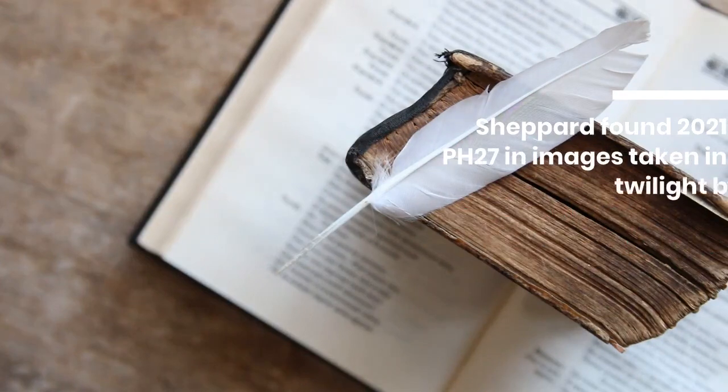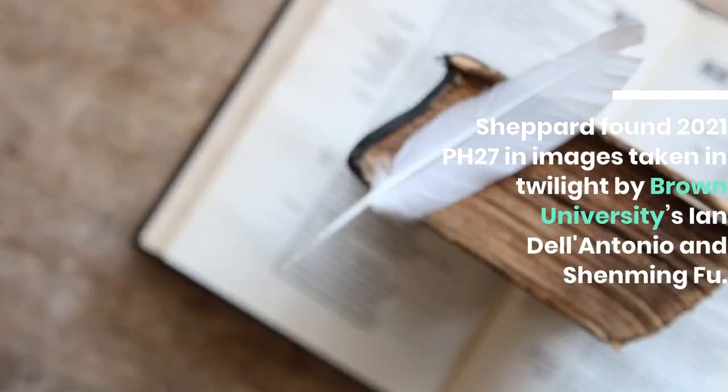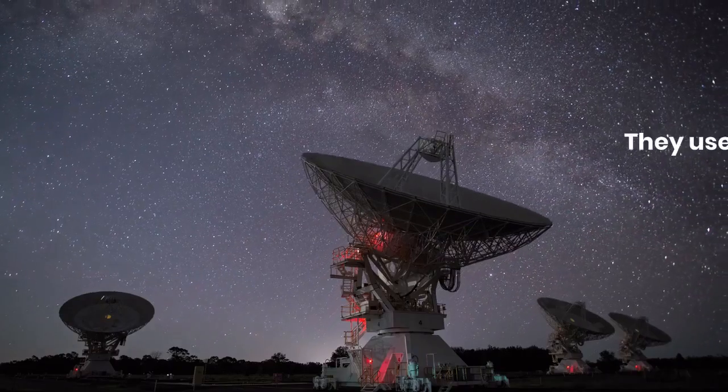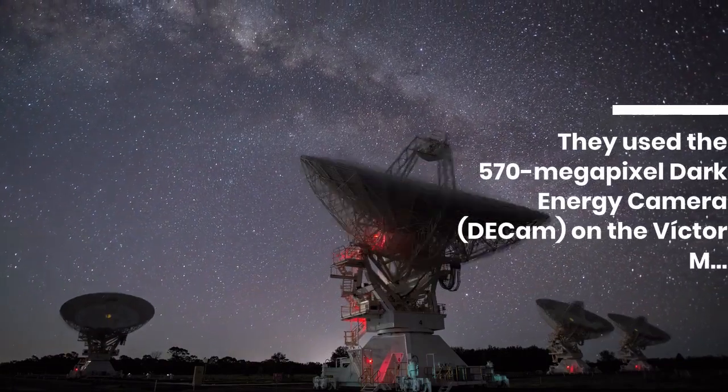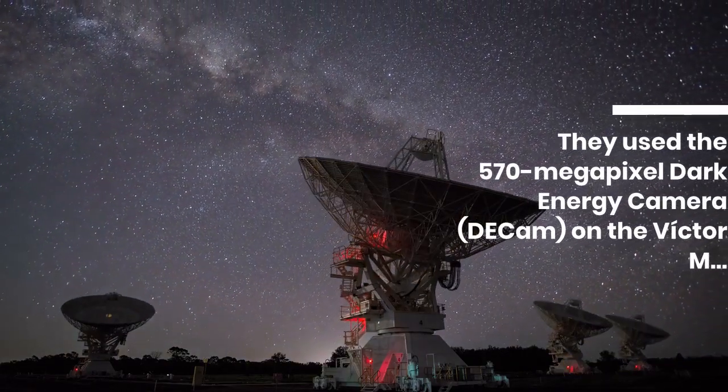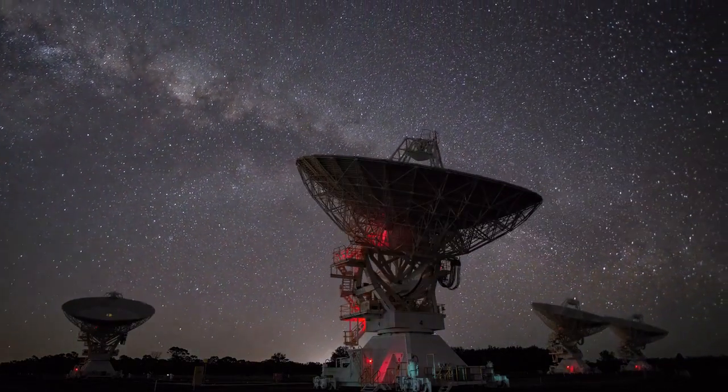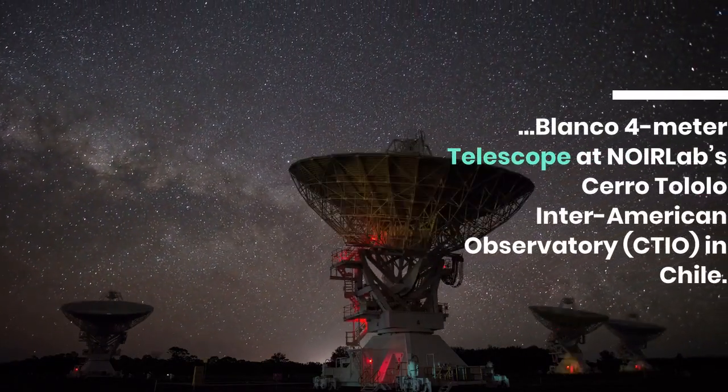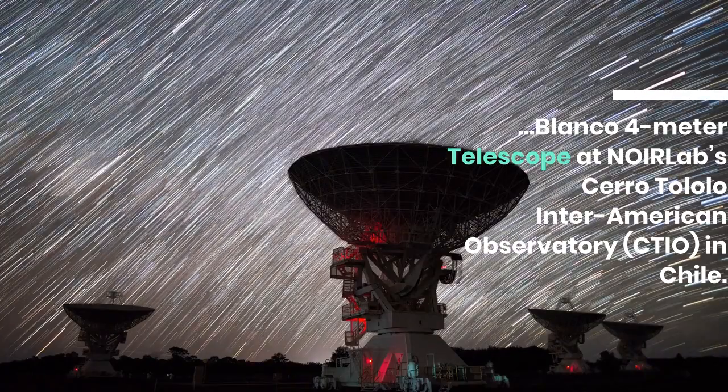Shepard found 2021 PH27 in images taken in twilight by Brown University's Ian Dell'Antonio and Shenming Hu. They used the 570-megapixel dark energy camera, DECam, on the Victor M. Blanco 4-meter telescope at NOIRLab's Cerro Tololo Inter-American Observatory, CTIO, in Chile.